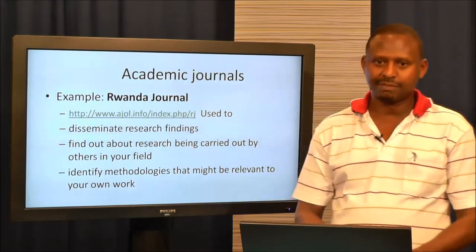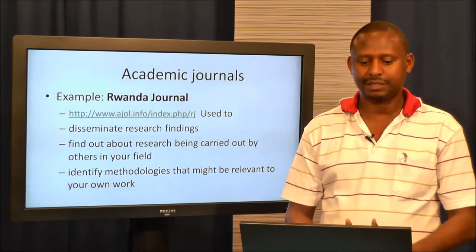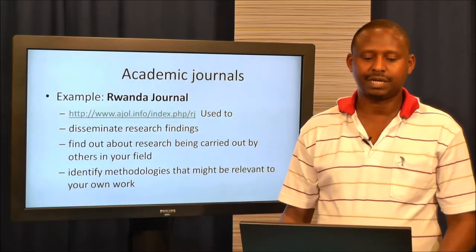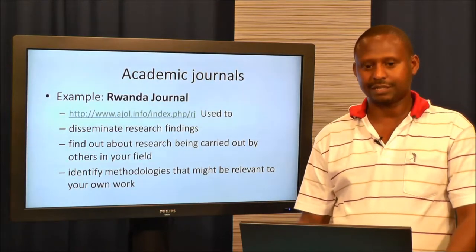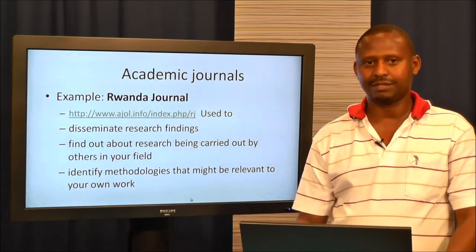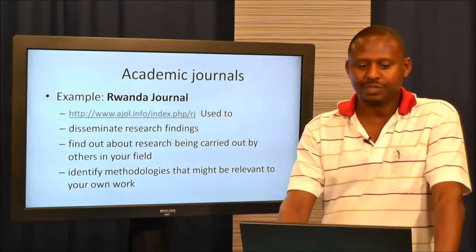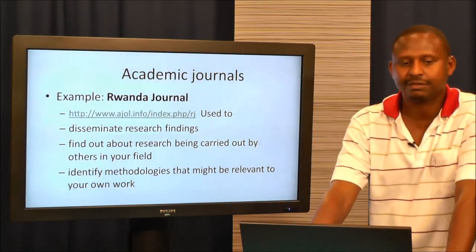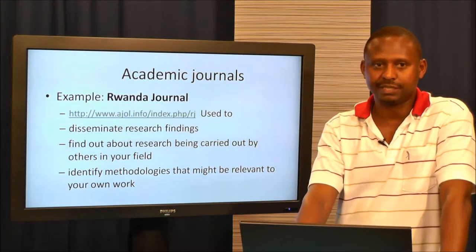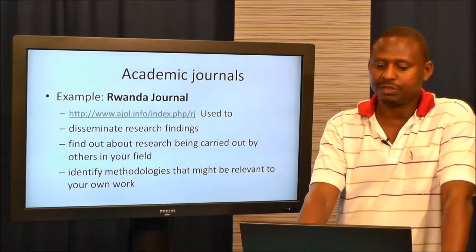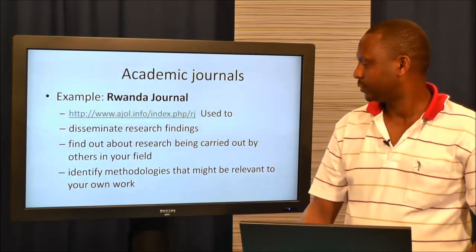An example of academic journals is the Rwanda Journal, which can be accessed through a journal info index site, as can be seen on the screen. This is used to disseminate research findings, find out about research being carried out by others in the field, and identify methodology that might be relevant to one's own research.